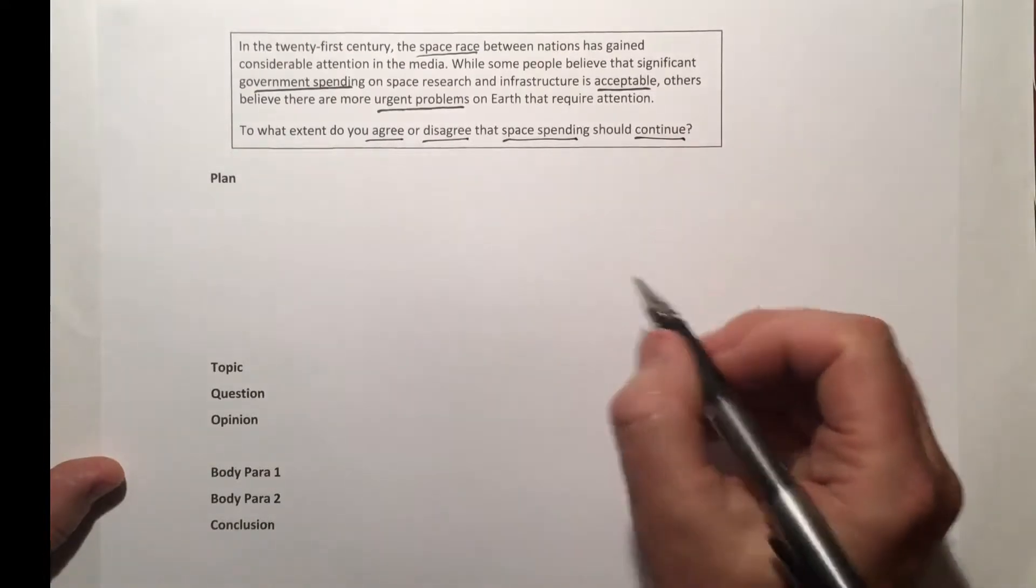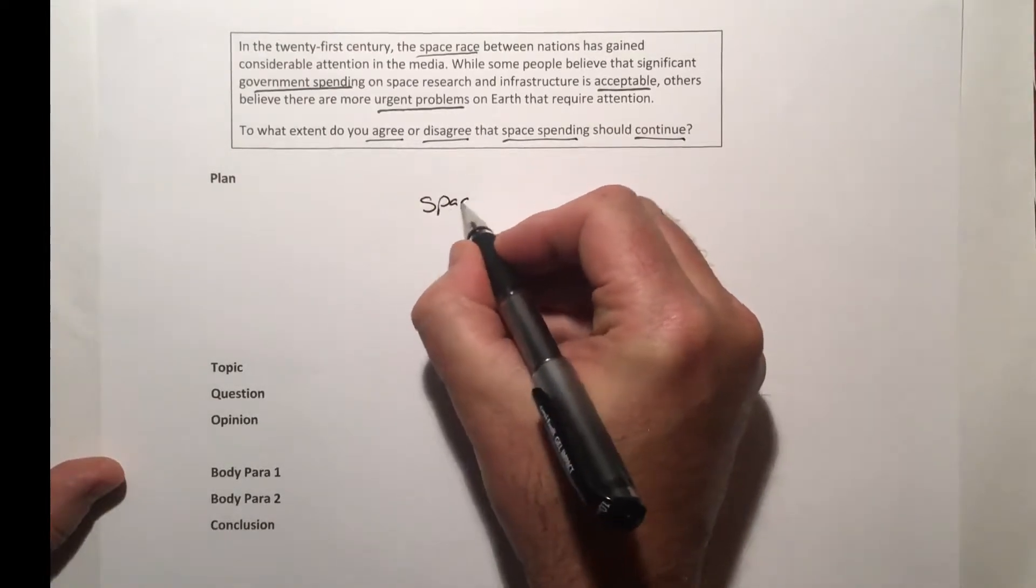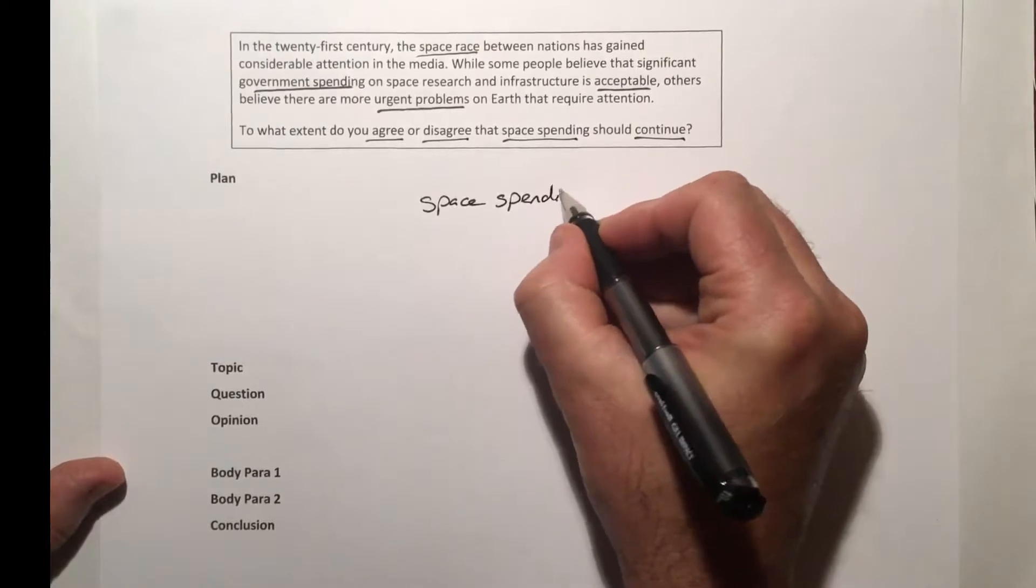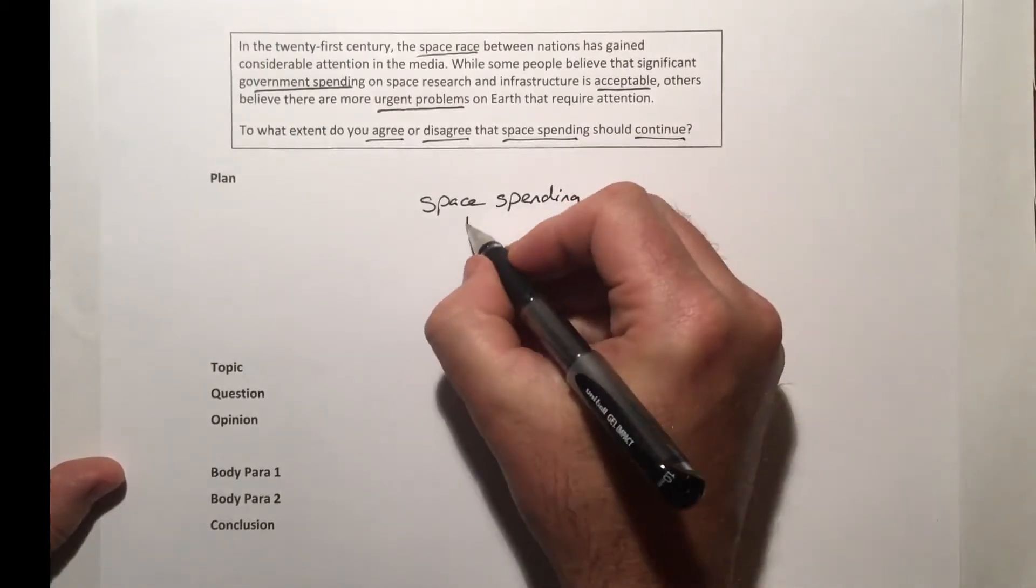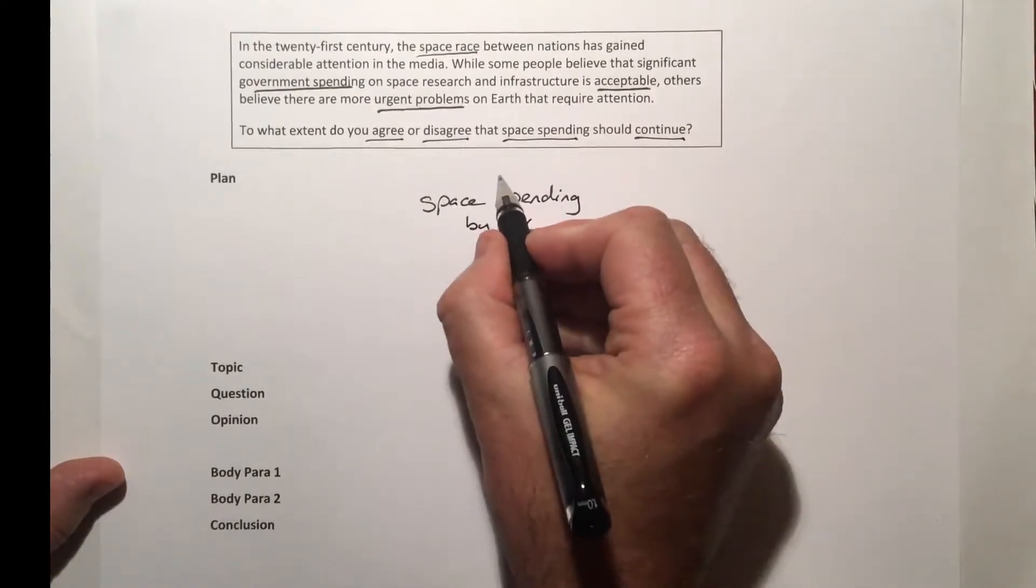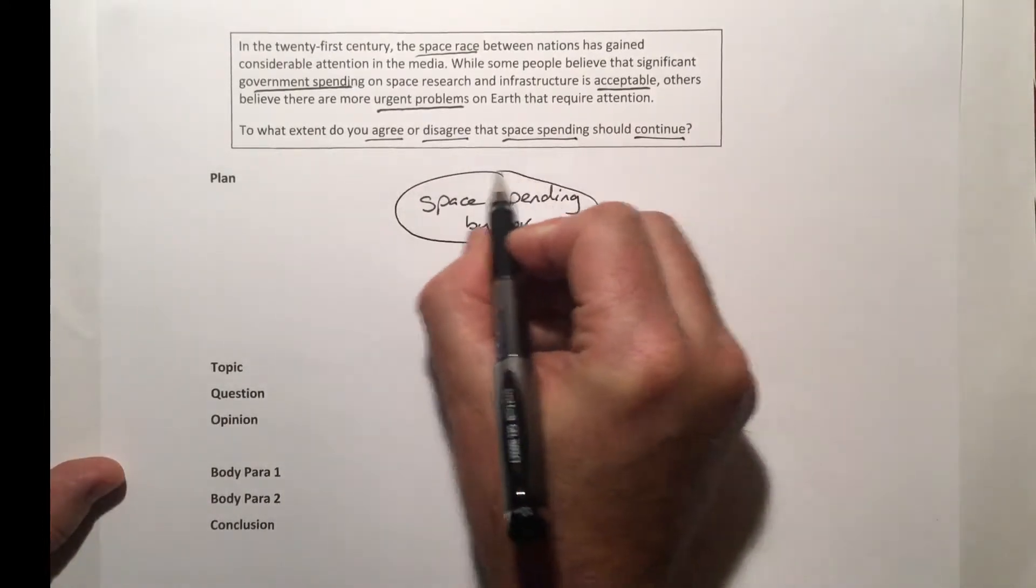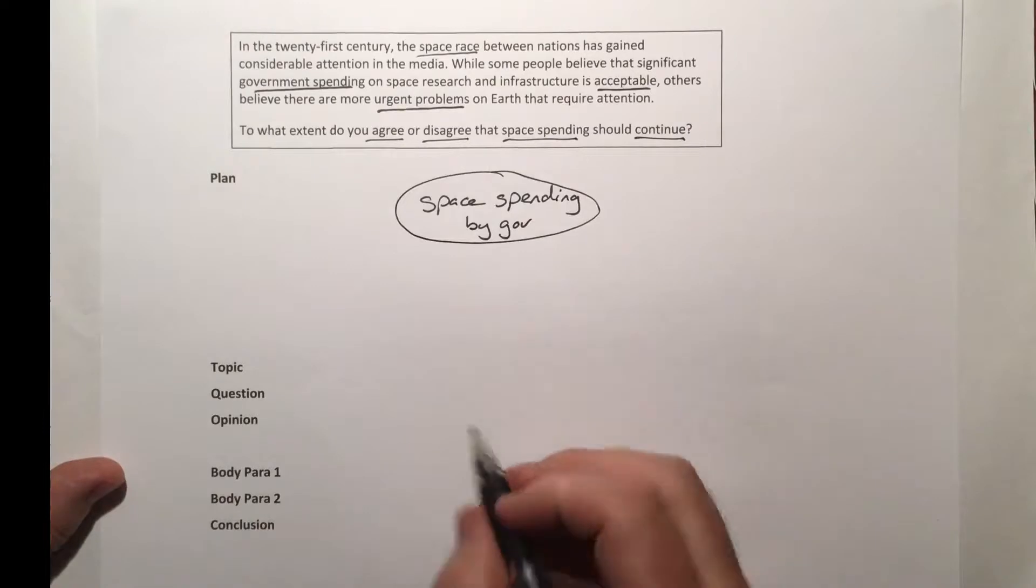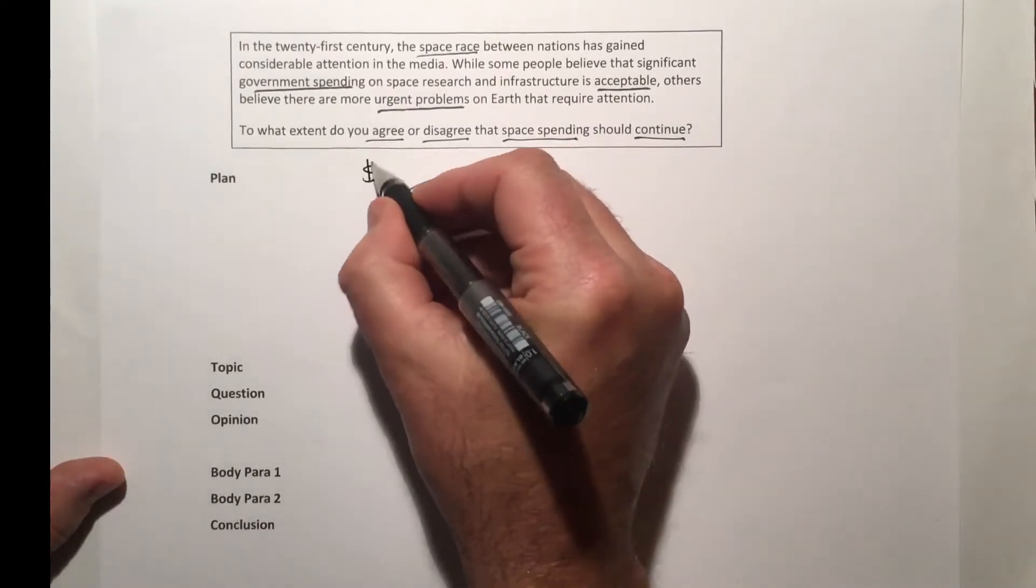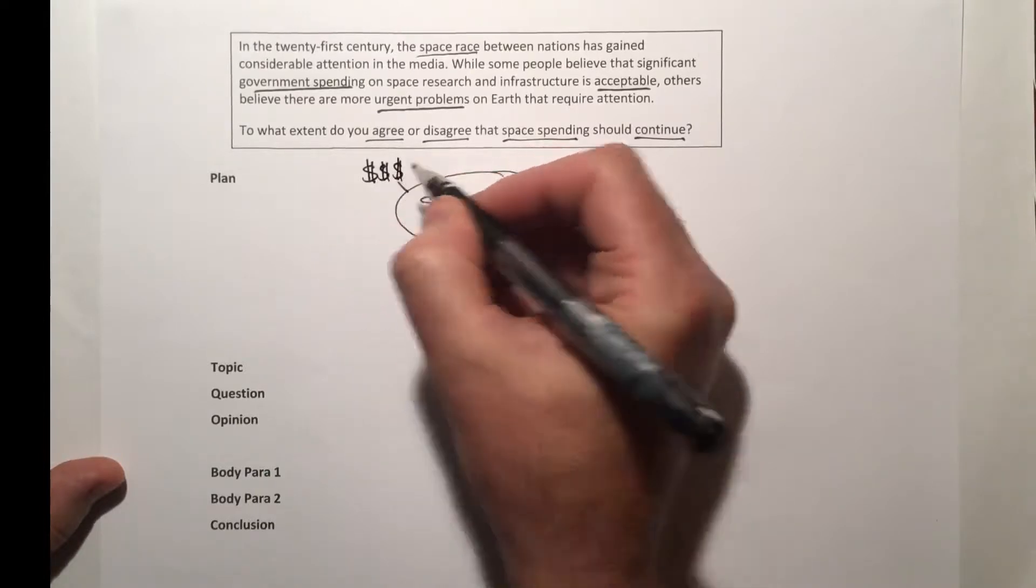Let's make a plan here. I'm going to make a nice clear mind map: space spending by government. I'm going to put a little circle around that and try to gather some ideas. We know that it's very expensive, isn't it?